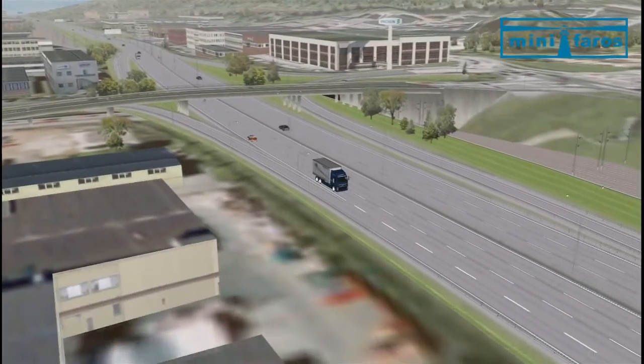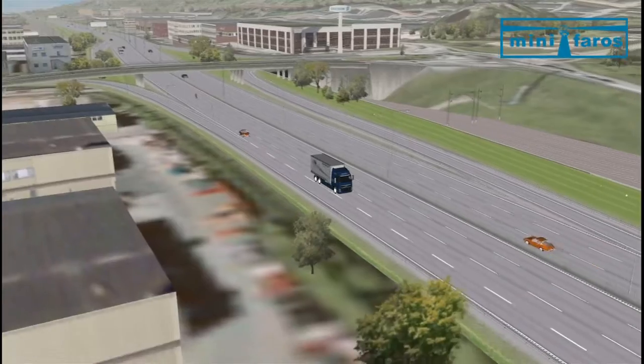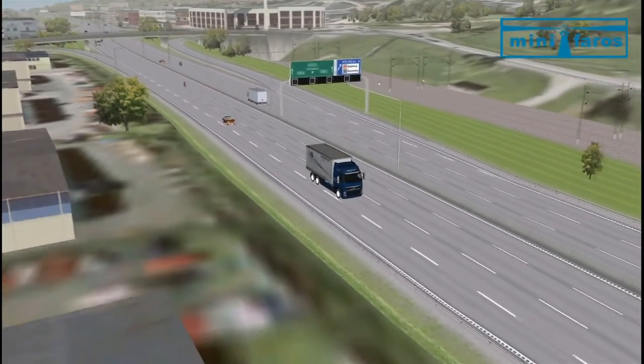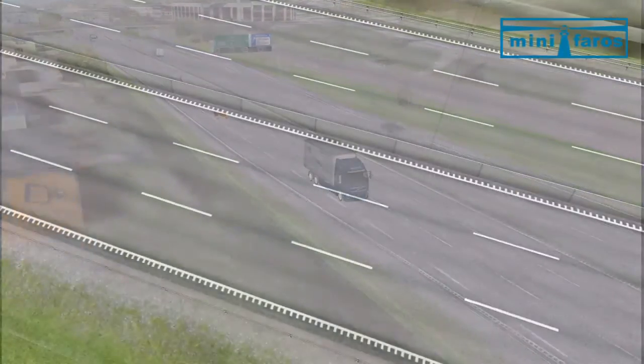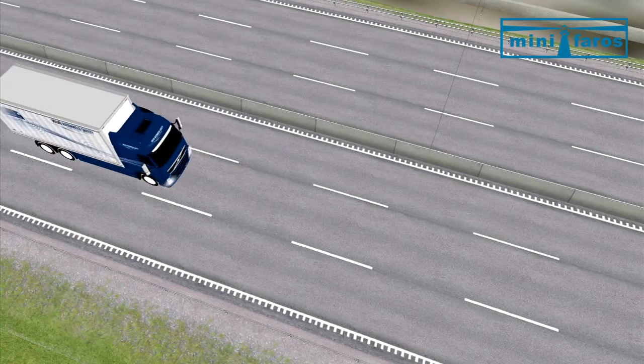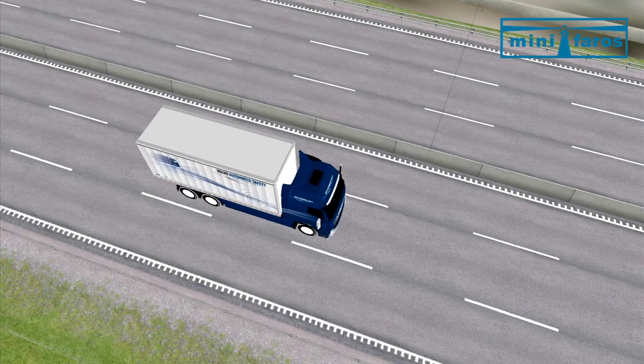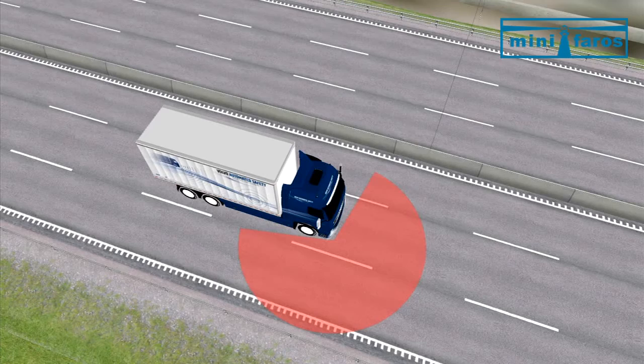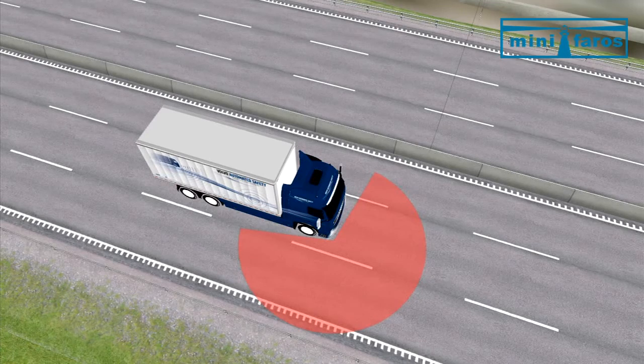The MINIFAROS sensor will greatly enhance the environment perception and will support the development of active safety functions for heavy vehicles. The sensor is integrated in the front corner of the vehicle and allows even good surveillance of the very close area around the vehicle, both in front and on the passenger side.